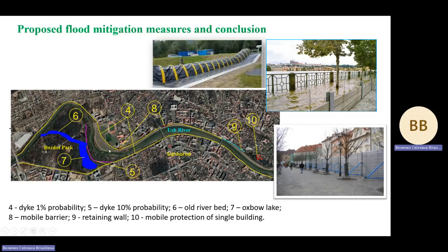After cleaning oxbow lakes and the old riverbed, it is possible to retain a small volume of approximately 170,000 cubic meters of water during the flood. The old riverbed of the Ush river located in Bozdush park, after cleaning and strengthening, can be used to discharge some part of flood water and lower the flood level in front of the suspension bridge. To protect some parts of the embankment, mobile flood barriers are proposed, which will allow the floodplain in the green zone not to be narrowed.